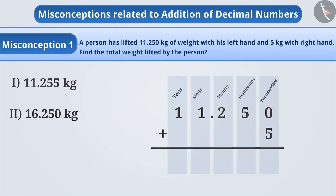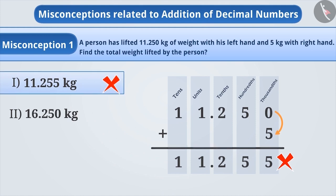the place value of digits is ignored. Here, while solving this example, 5 is written below 0 and the sum obtained is 11.255 kg. Since the placement of numbers has not been done correctly, the incorrect answer option 1 is chosen.